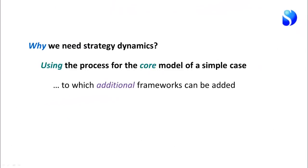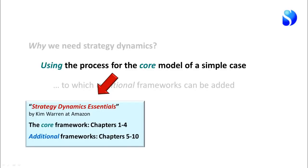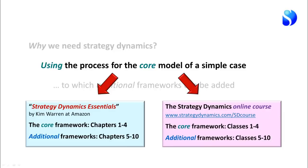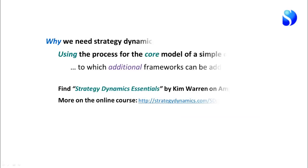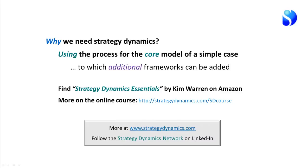So in this presentation I've explained why we need strategy dynamics and given an explanation of how the process is used to build the core model for a business, using this simple case. I've also explained that we need additional frameworks. The ebook 'Strategy Dynamics Essentials' on Amazon covers the core process in the first four chapters, with additional frameworks in chapters five to ten. Our online course follows exactly the same structure — core frameworks in classes one to four, additional frameworks in classes five to ten. If you want to find out more, there's plenty of information and resources at strategydynamics.com, and a useful discussion on the Strategy Dynamics Network on LinkedIn.